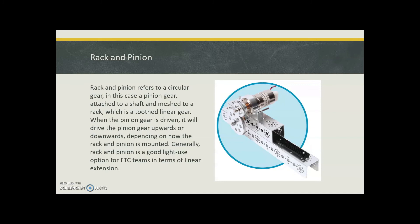Rack and pinion. Rack and pinion refers to the circular gear. In this case, the pinion gear is attached to a shaft and meshed to a rack, which is a toothed linear gear. When the pinion gear is driven, it will drive the rack upwards or downwards depending on how the rack and pinion is mounted.